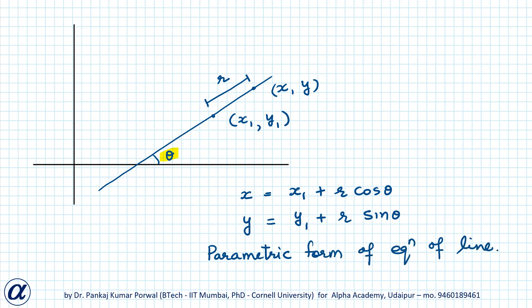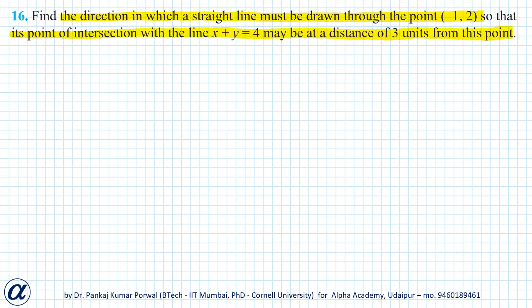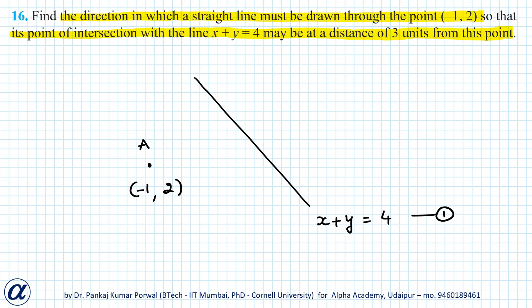Here theta is fixed and r is the variable distance. In this question, let's say this is our line x plus y equals 4, and our point is (-1, 2). There is a line that passes through this point and intersects x plus y equals 4, and we want to find the direction of this line — that is, the angle made by this line with the positive direction of the x-axis. We are also given that the distance of the point of intersection from our point is 3 units.